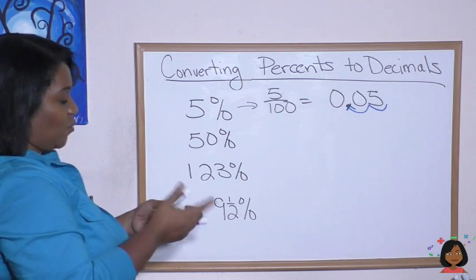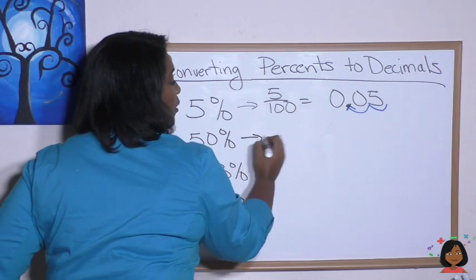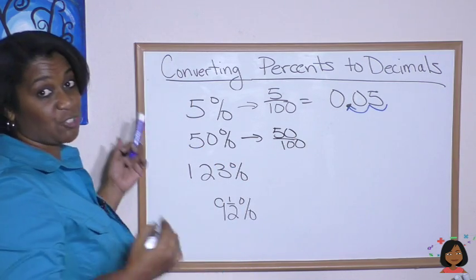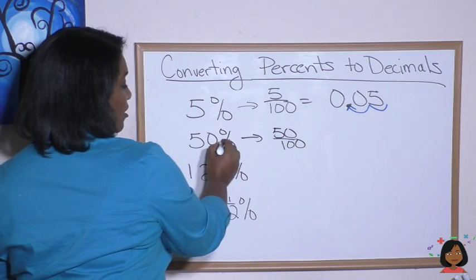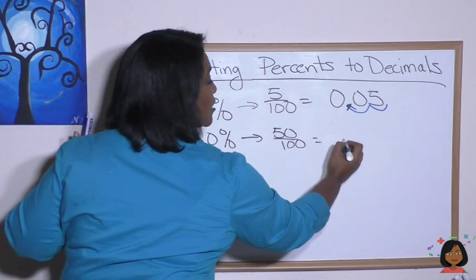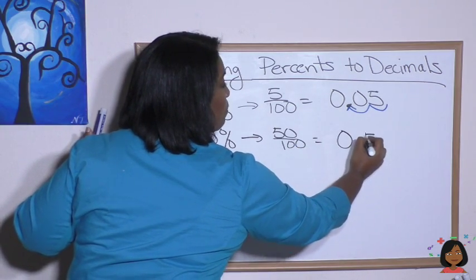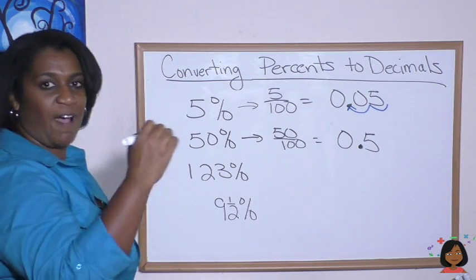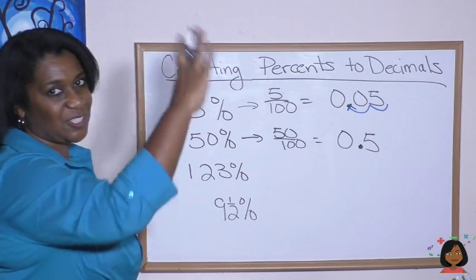So 50 percent, which we know is the same thing as 50 over 100, or we can just try moving the decimal point two places: one, two. That's the same as saying 0.5. And isn't that what we would have put anyway? We would have 0.50, and you know we can just drop that zero.